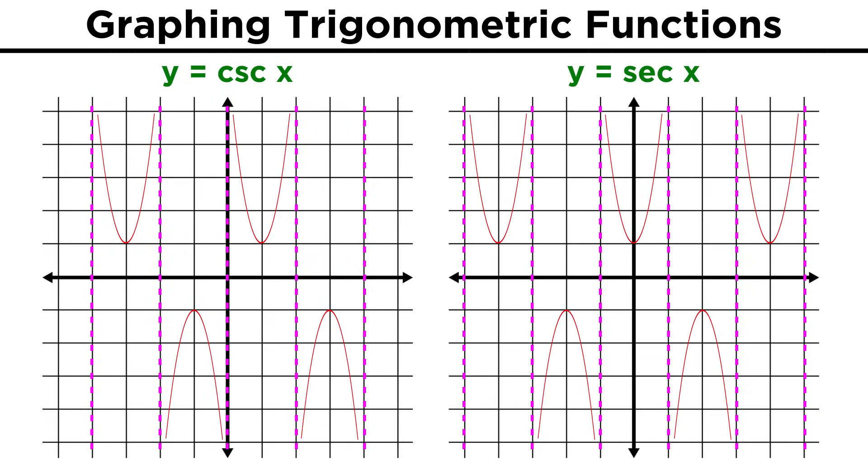Cosecant and secant will also look a little funny, as all the points where the sine and cosine equal zero will now be asymptotes for their reciprocal functions, again because one over zero is undefined. The transformations for all these graphs are exactly what you would expect, so having gone over this already, let's check comprehension.